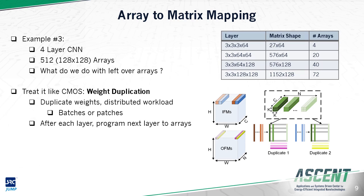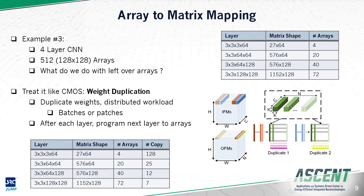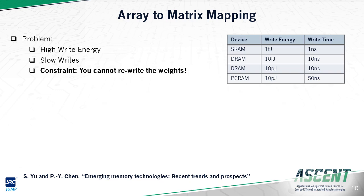Prior work duplicates these arrays and performs a distributed workload, either parallelizing over feature maps in the CNN or over different batches in a different model. In a naive implementation, we would reprogram the arrays after each layer to the new layer. However, writing to embedded non-volatile memories like PCRAM or RRAM requires significantly higher write power and write time than traditional memories like SRAM or DRAM. Therefore, we cannot simply rewrite the weights.